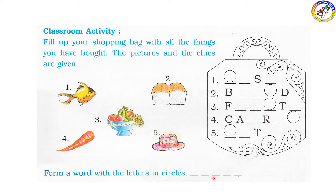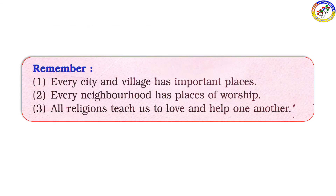Here is the circle with the letters A.N.A. Third one - fruits. F.R.U.I.T.S. Fourth one - carrot. C.A.R.R.O.T. Last letter is T. Next - hat. H.A.T.